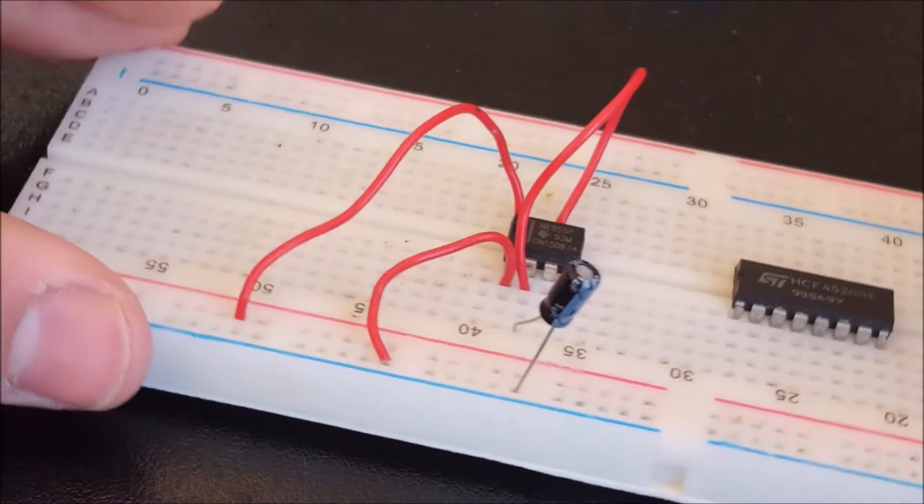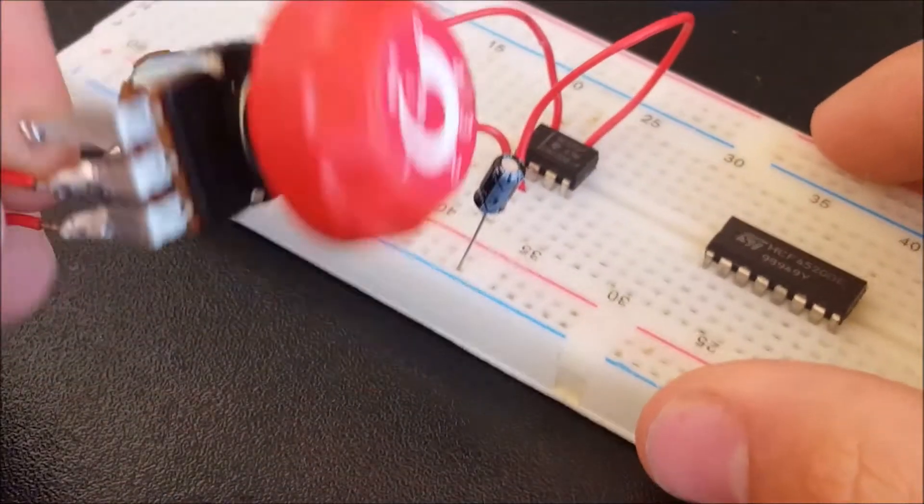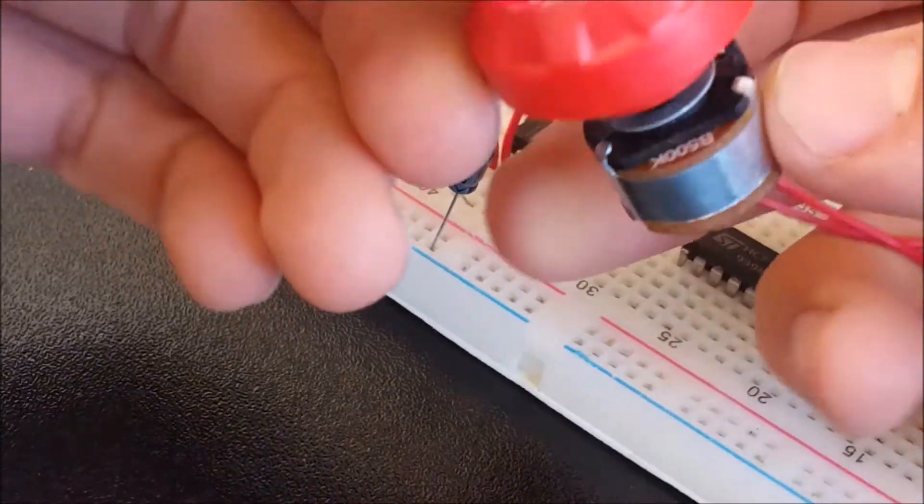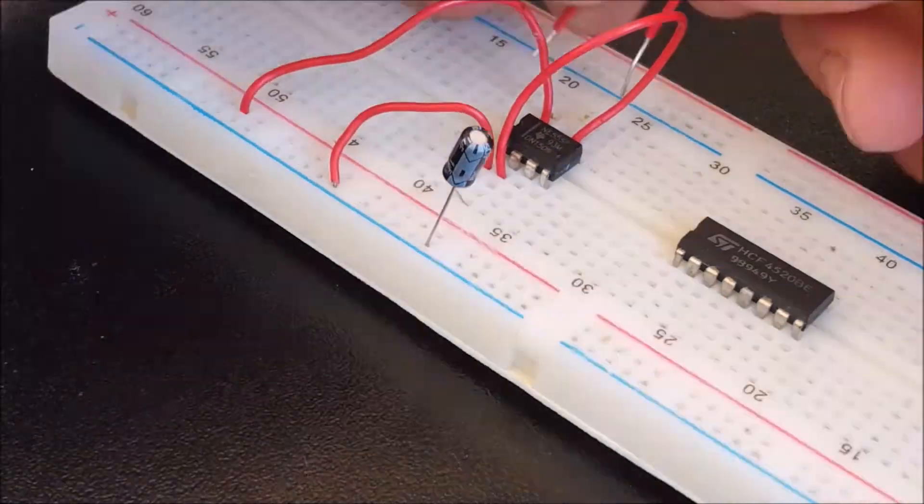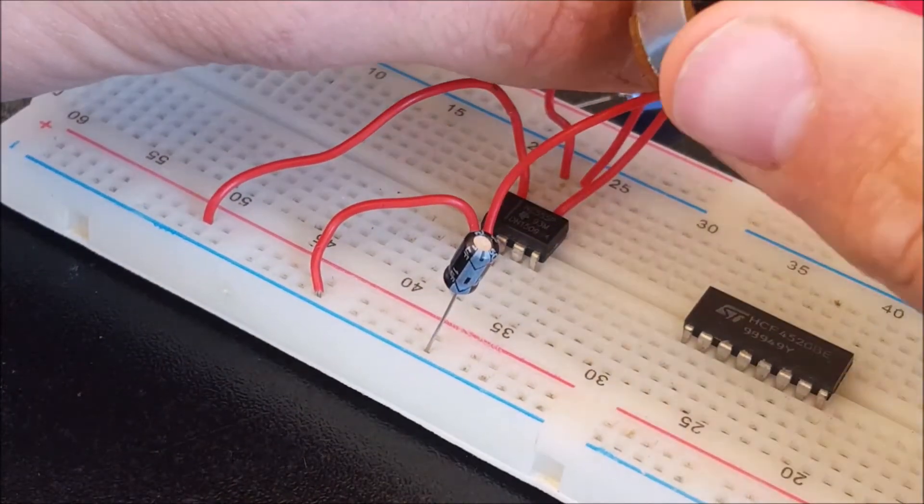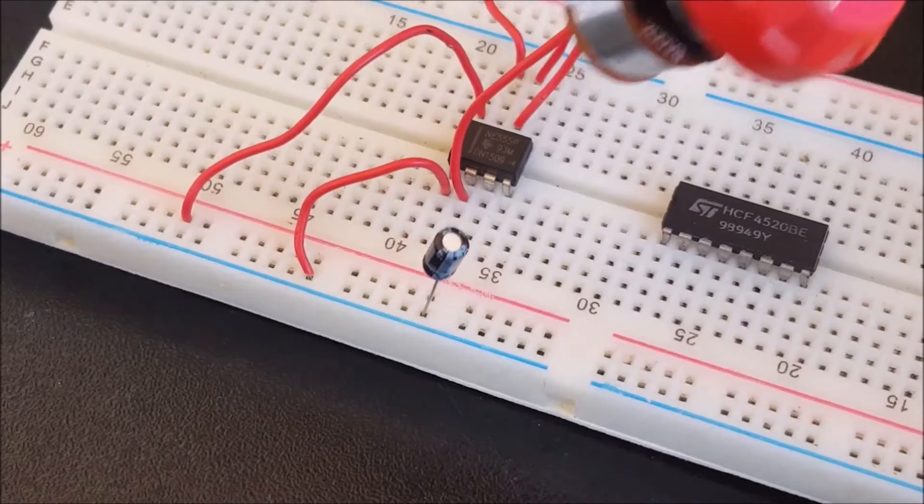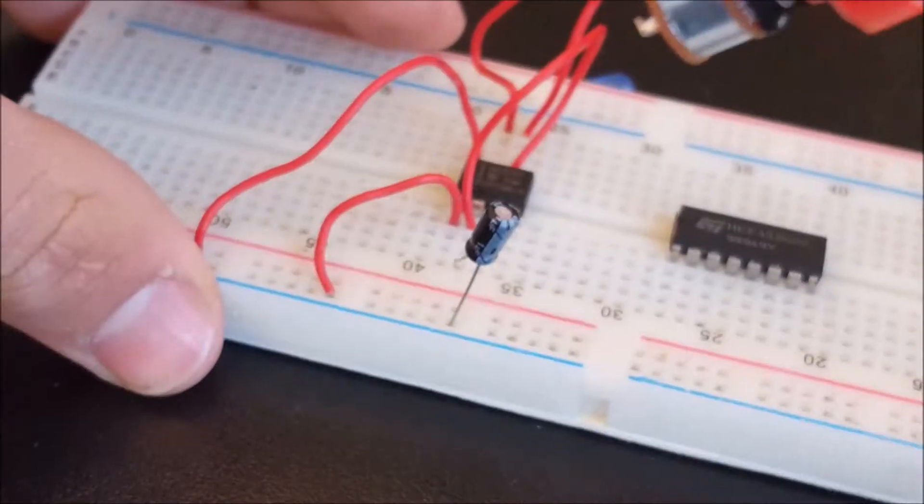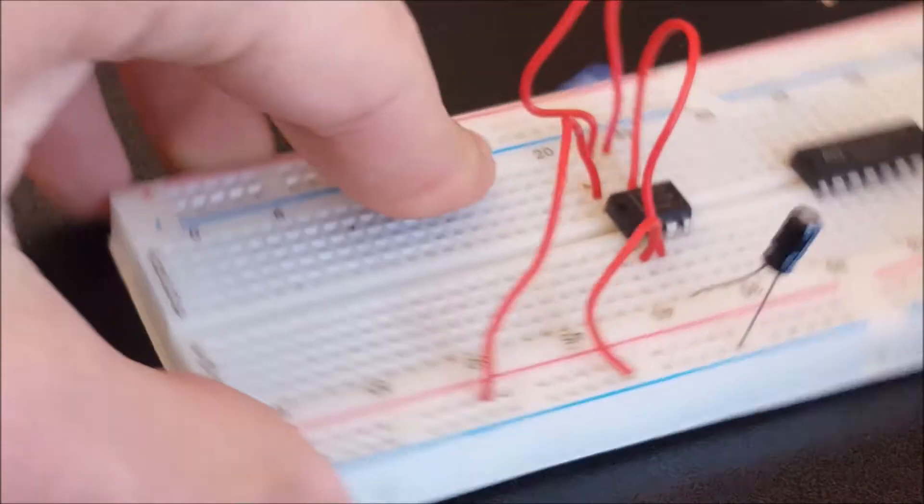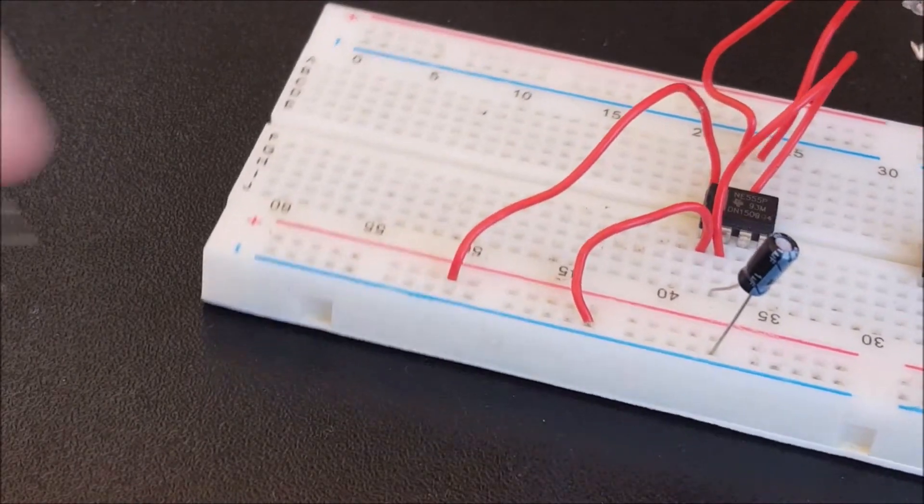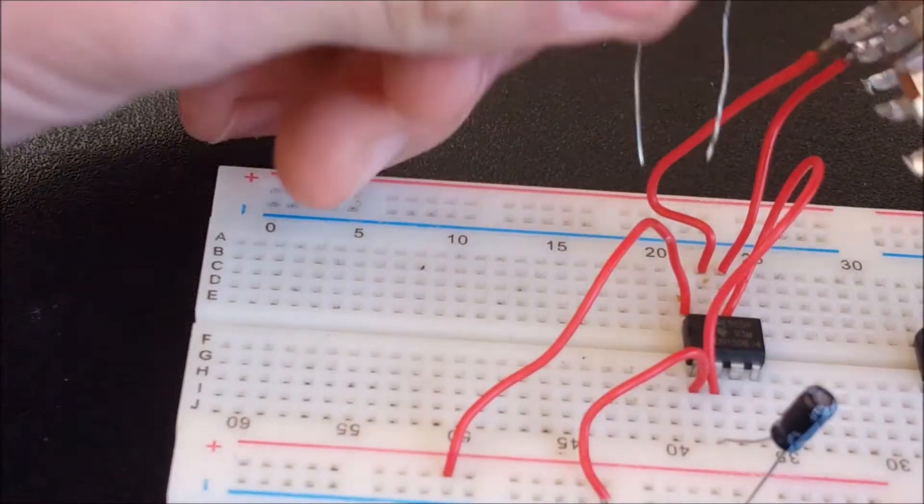And also, because this is a polarized capacitor, we are going to need to make sure that the positive side is on the microchip side and the negative goes to the ground rail. Now we are going to need to connect our potentiometer or variable resistor from pin 6 to pin 7. In my case, I'm using a 500 kilo-ohm potentiometer. Also, if you're wondering, this potentiometer is to control the speed. Note that you don't have to use a 500 kilo-ohm potentiometer - if you want, you can experiment with different values. Now we are going to need to connect our 100 kilo-ohm resistor from pin 7 to pin 8.